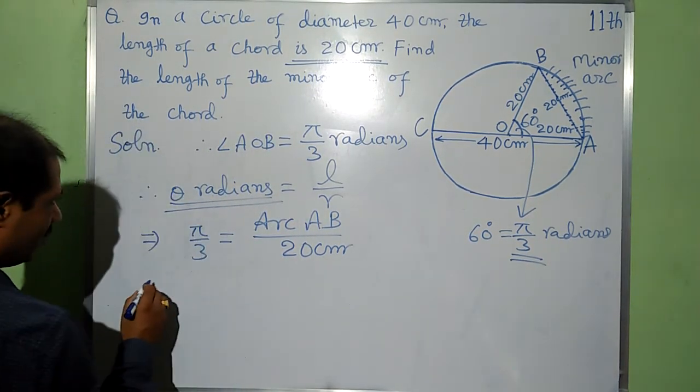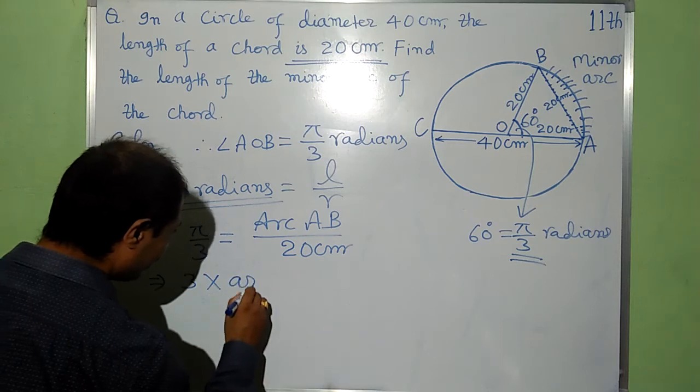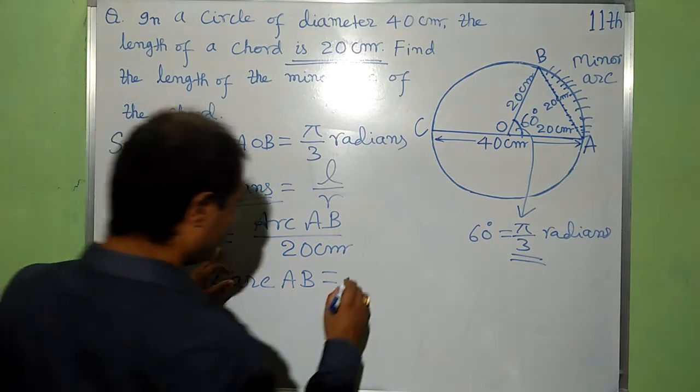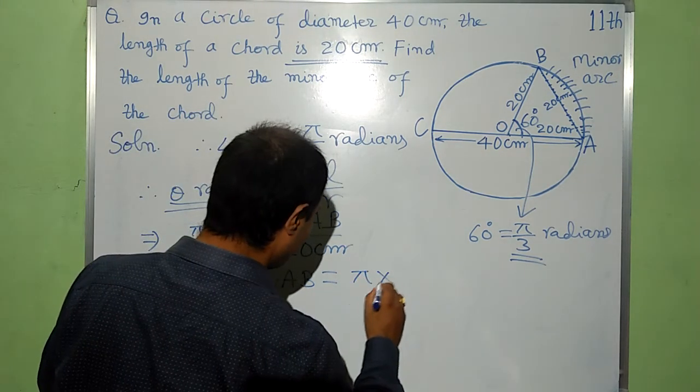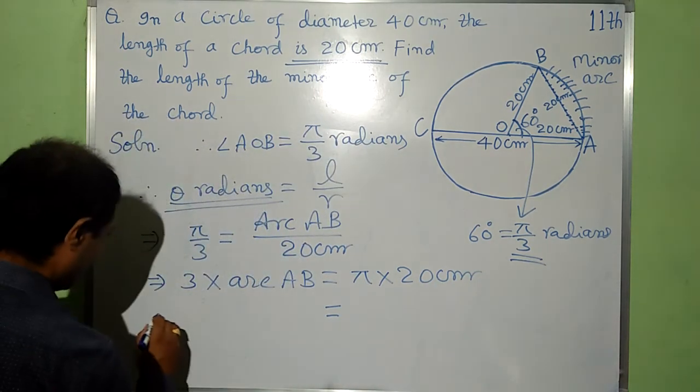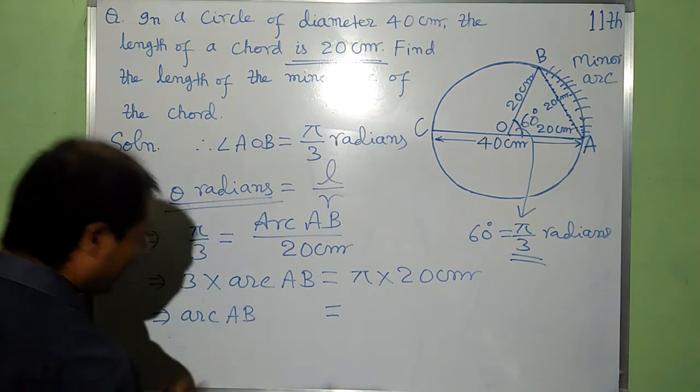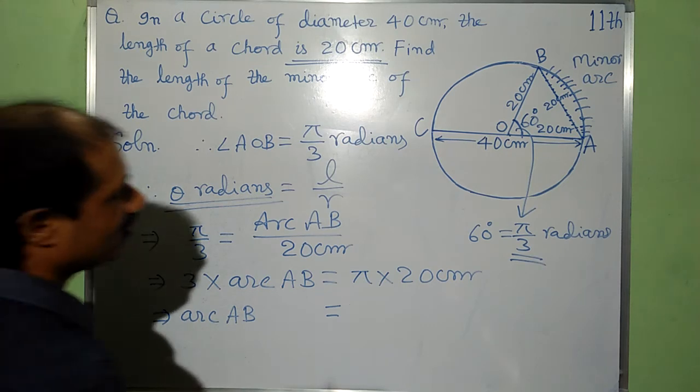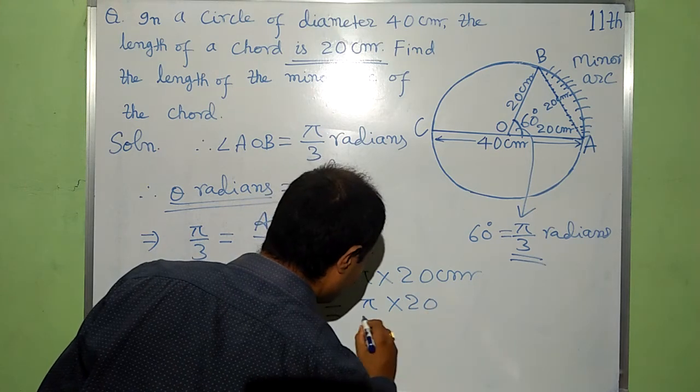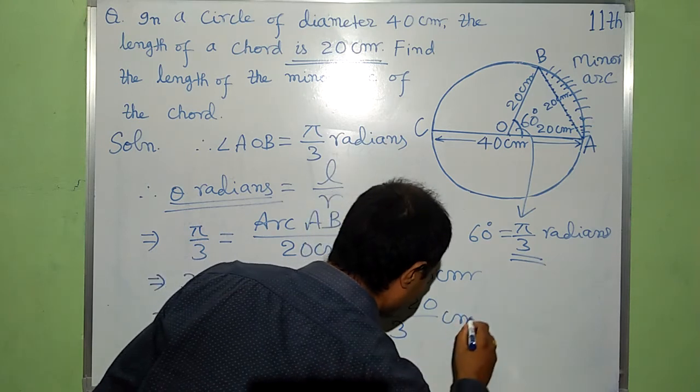Now by cross multiplication, then we have 3 into arc AB is equal to pi into 20 centimeters. And, this implies that arc AB, which is required, arc AB is equal to pi into 20 by 3 cm.